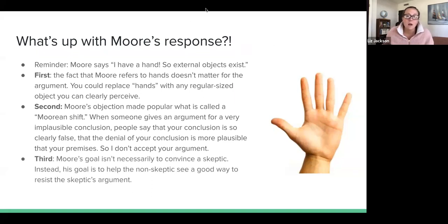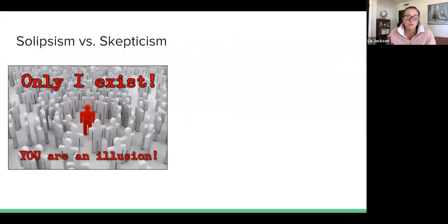Third thing to say is that Moore's goal isn't necessarily to convince a skeptic. So Moore isn't necessarily thinking all the skeptics are now going to think we have tons of knowledge because of my proof of the external world. But instead, Moore wants to help the non-skeptic see here's a good way to resist the skeptic's argument. And again, don't let the skeptic pull you away from common sense. Here's a hand. Come on guys, that's common sense.